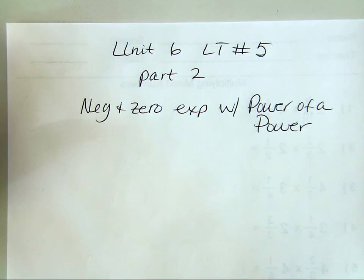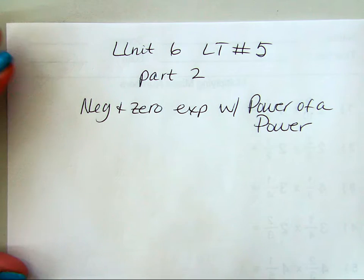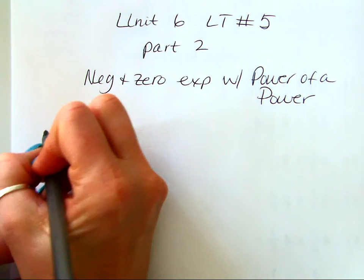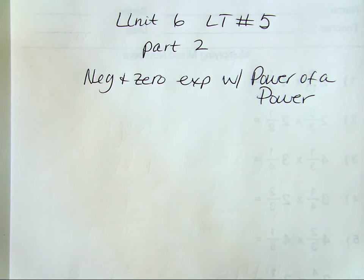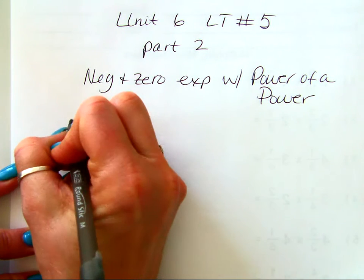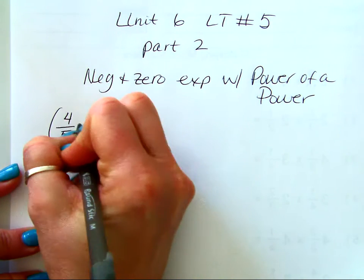We're going to start out really easy. One of the biggest properties that you're going to need to know — I think we already kind of talked about this. Let's just review what we would do here. So let's take 4 fifths and square it.